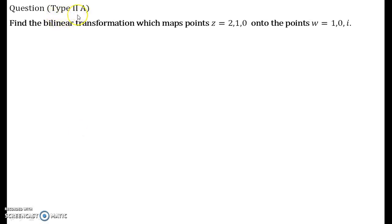So let us see how to solve the problem. This is type 2 questions. I have already covered type 1 questions in my previous video lecture. This is subtype A in type 2. Find the bilinear transformation which maps the points z = 2, 1, 0 onto the points w = 1, 0, i, where i is the imaginary number. So now how do we solve this? First of all, we will label the points that are given to us. That is z1 = 2, z2 = 1, z3 = 0.